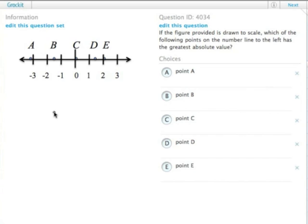If this figure is drawn to scale, which one has the greatest absolute value? Absolute value—remember, you have an X or something in this notation. The absolute value of something is its distance from zero.